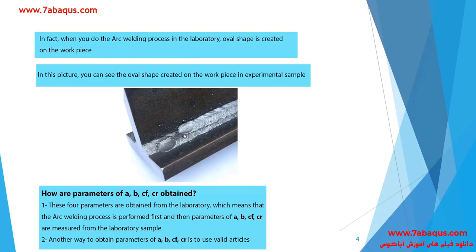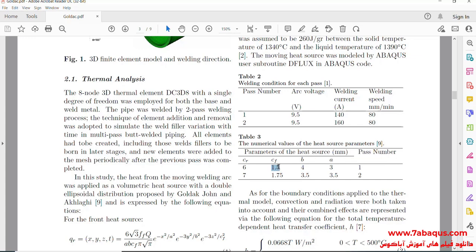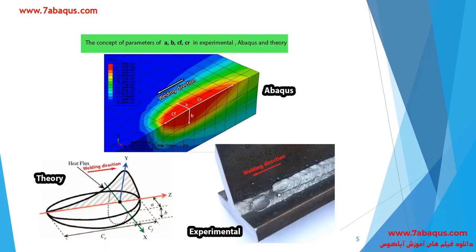The second method is that you can obtain these four parameters from reliable articles. For example, in this article you can clearly observe these four parameters: a is equal to 3 mm, b is equal to 4 mm, cf is equal to 1.5 mm, and cr is equal to 6 mm. In these three pictures, the concept of a, b, cf, and cr parameters in Abaqus, theory, and experimental models has been properly distinguished.